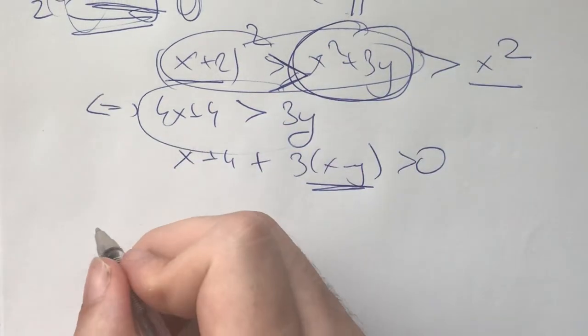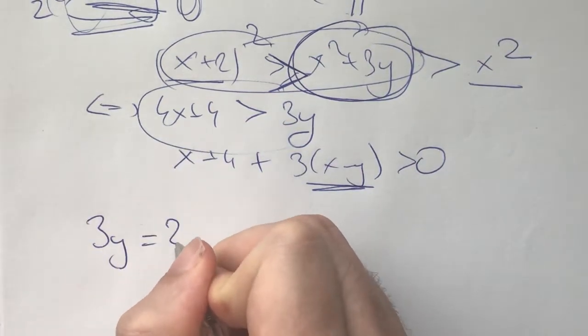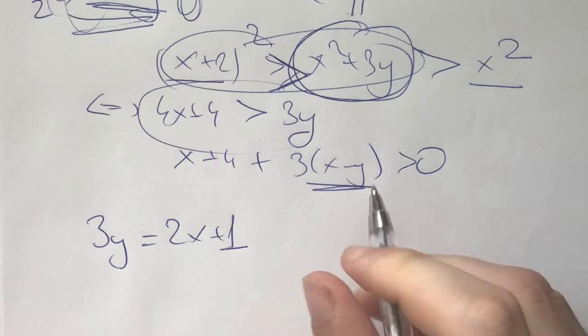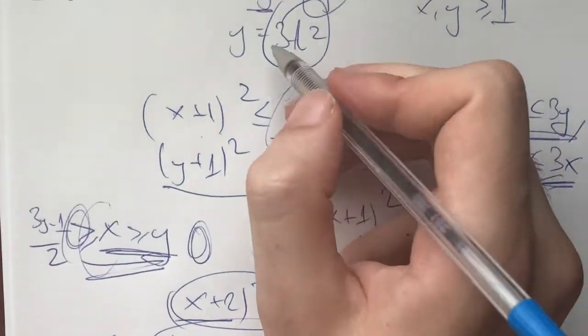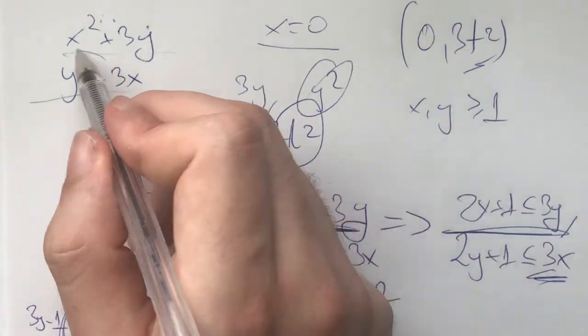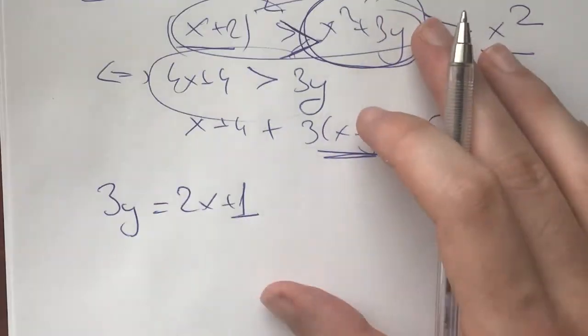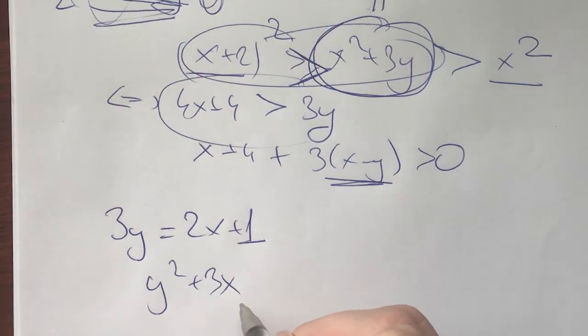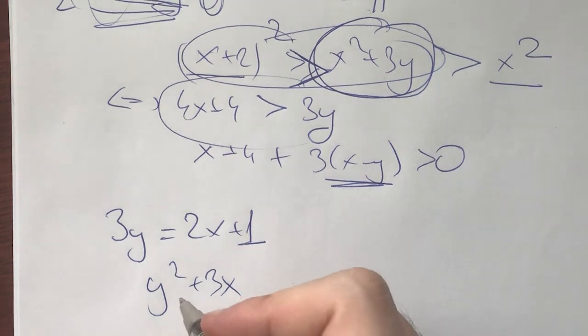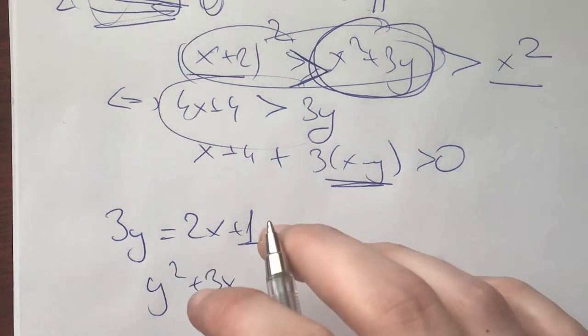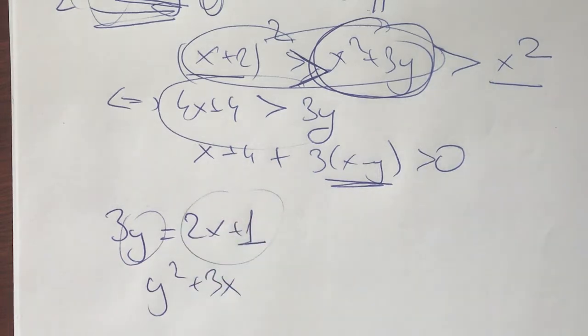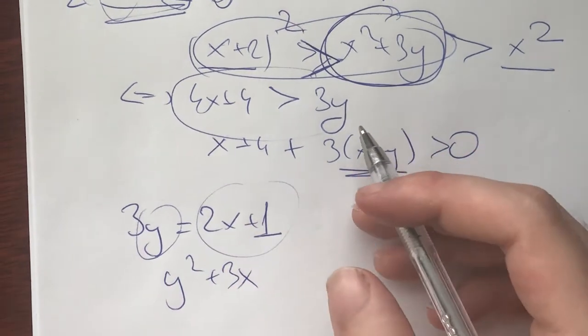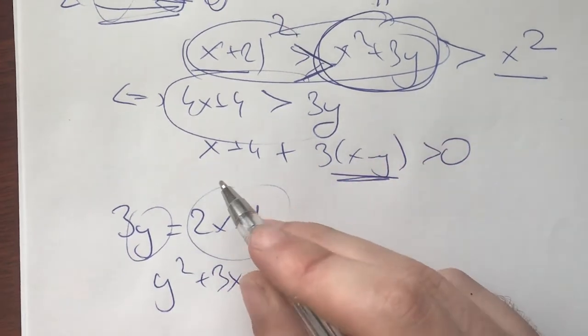So now with this, that implies that 3y is equal to 2x+1. And now with that, can we apply that in our other thing, in this problem right here. So we have y²+3x must also be a square. Now we can't really do that much bounding here, but now we can switch one of these things.